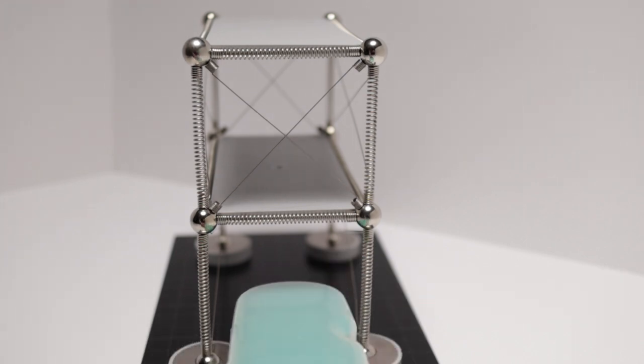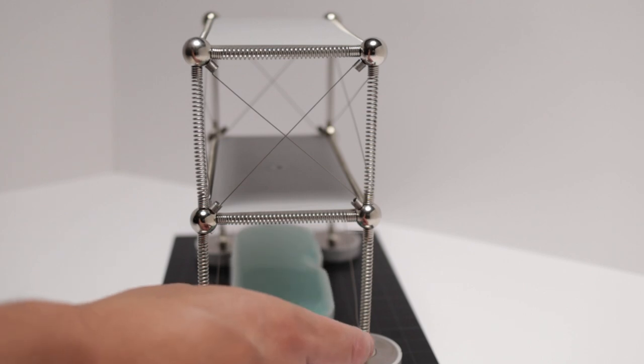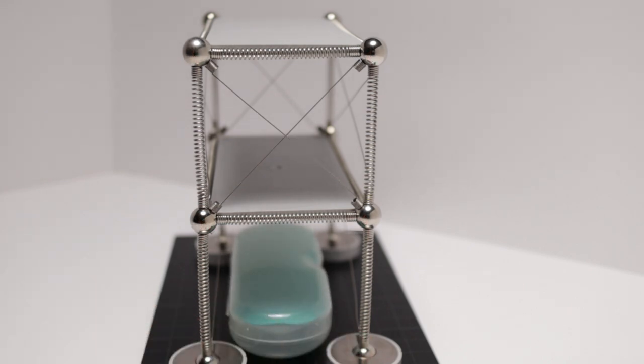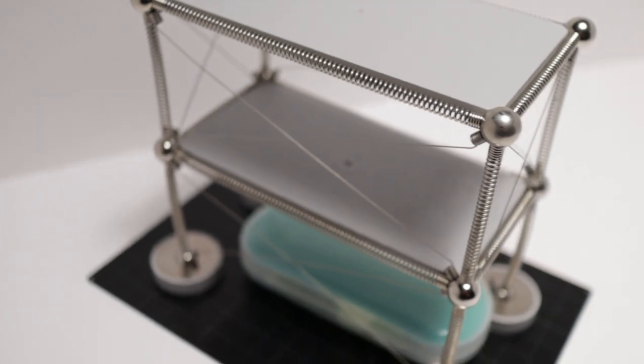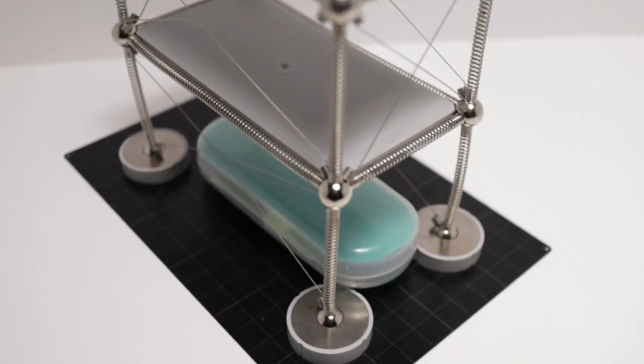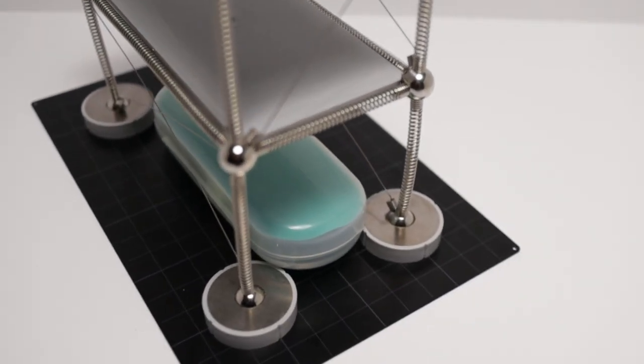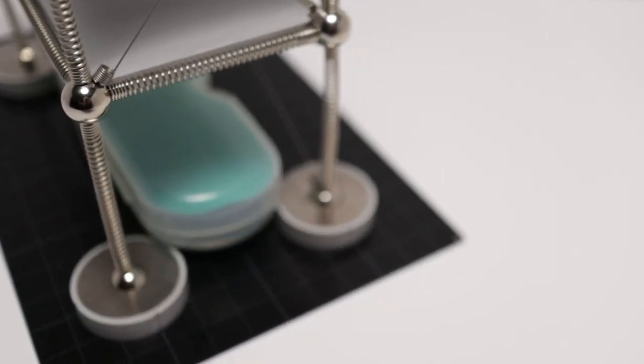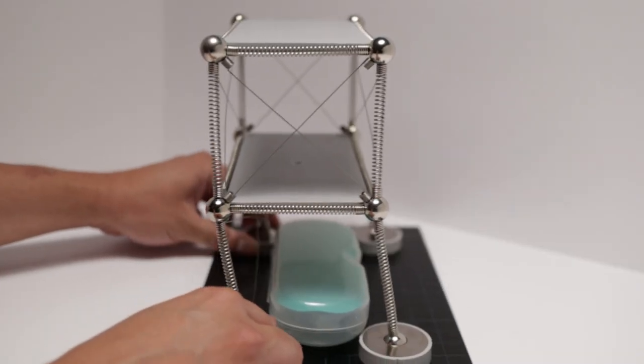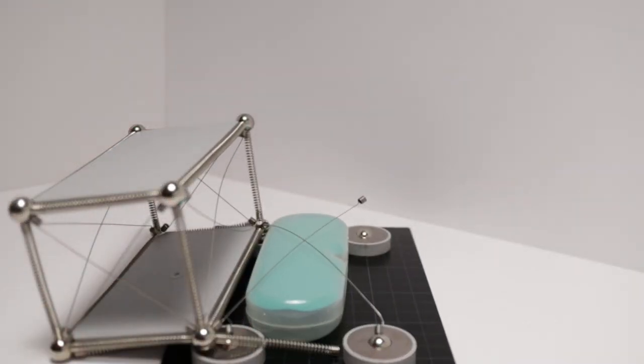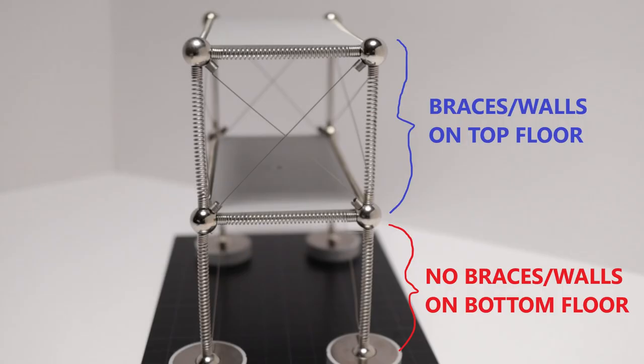So just as in real life, the structure looks fine, it's standing up, but if an earthquake happens, the structure pancakes and flattens out because there's not enough shear walls or braces on the bottom floor.